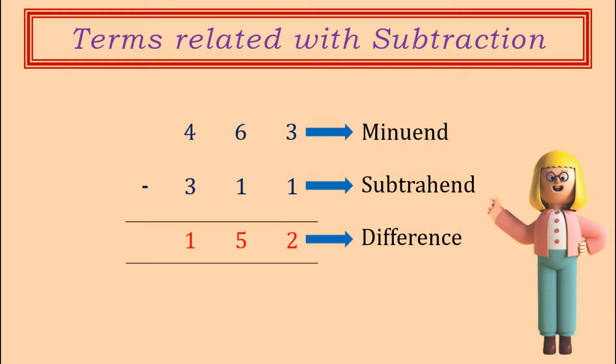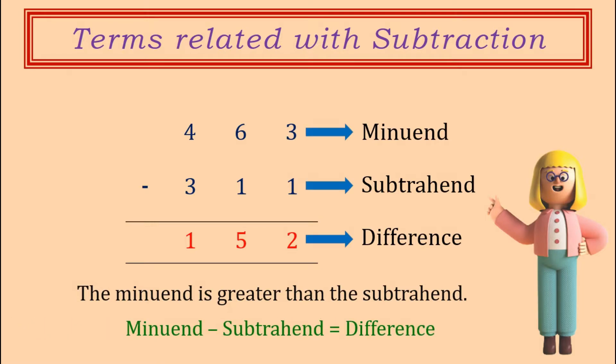We can clearly see that 463 is greater than 311, which means the minuend is greater than the subtrahend. Remember, the minuend always comes before the subtrahend. So in equation form, we can write it as: minuend minus subtrahend equals difference.